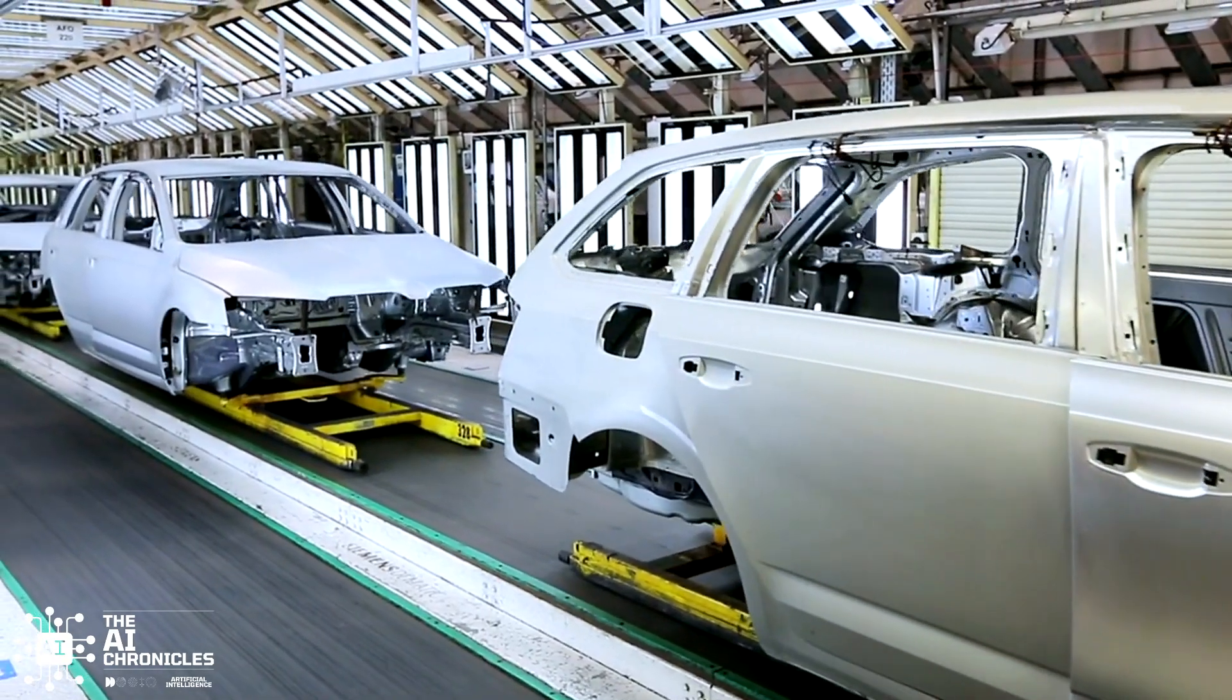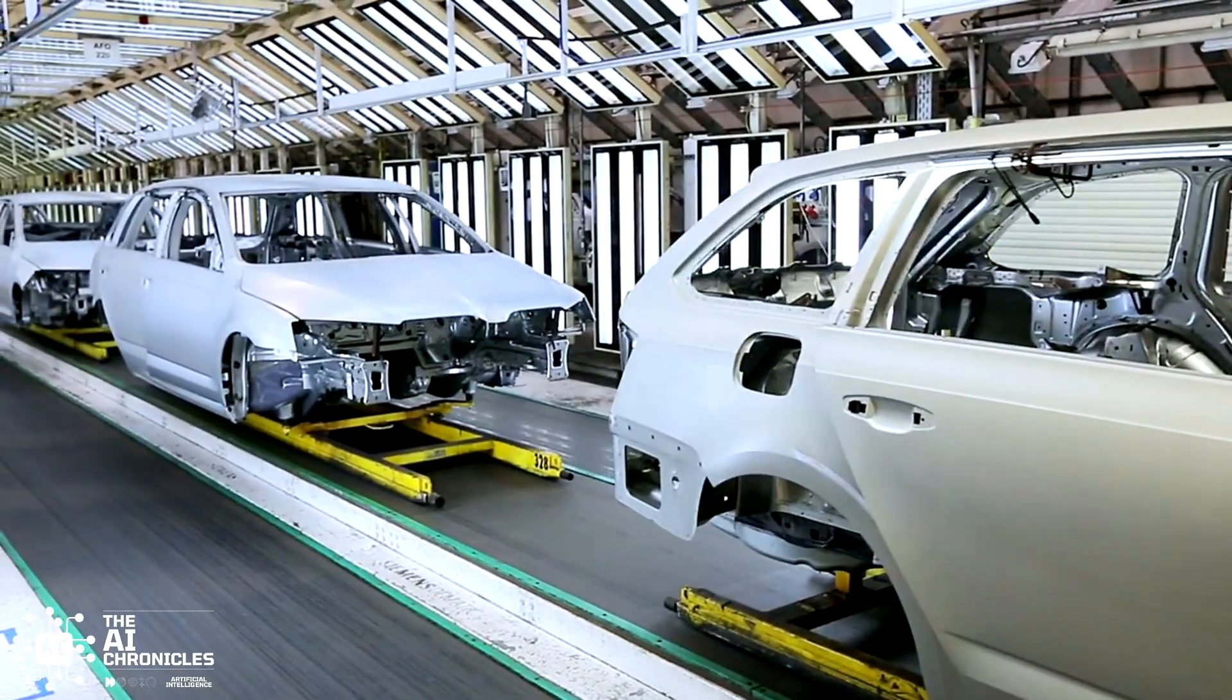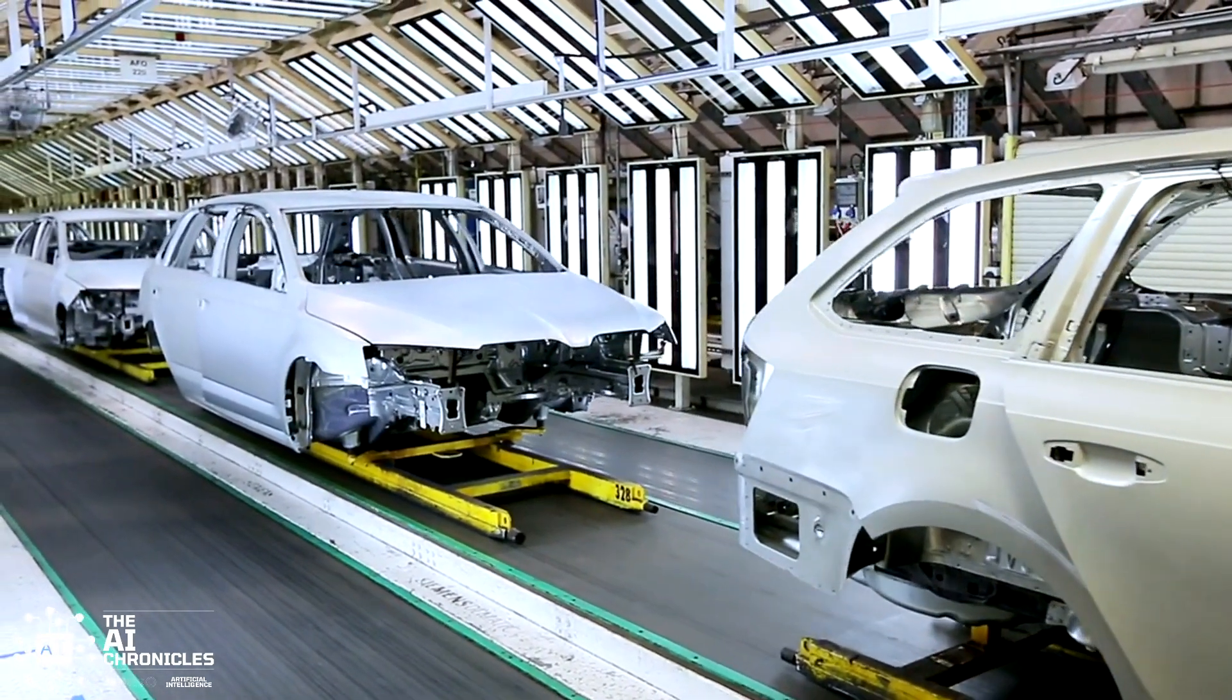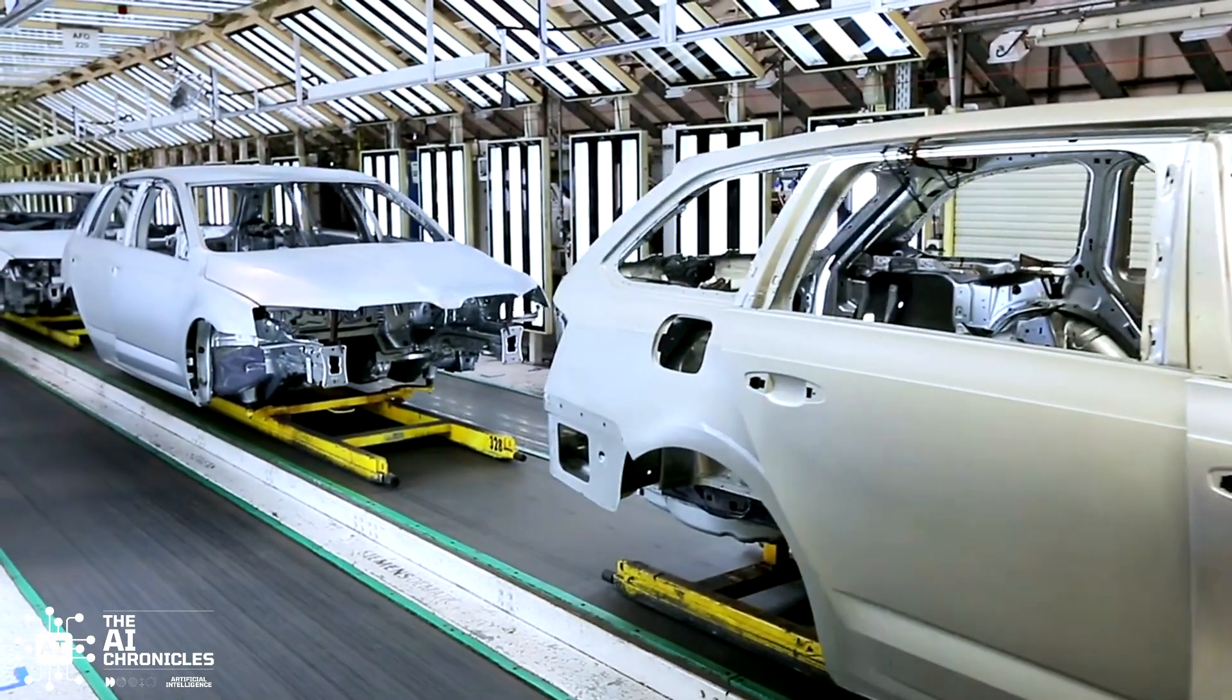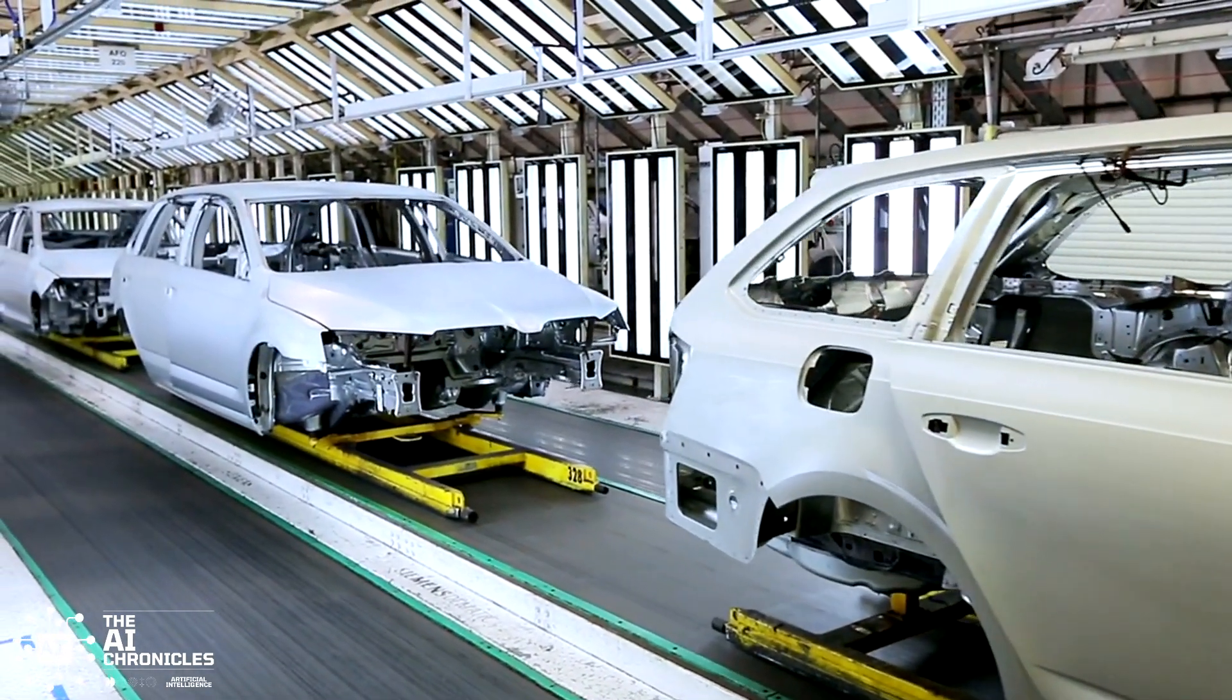The Second Industrial Revolution took place in the late 19th to early 20th century. It heralded in the age of electricity where assembly lines brought mass production, setting the stage for global industry.